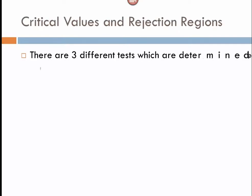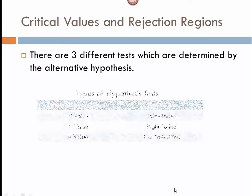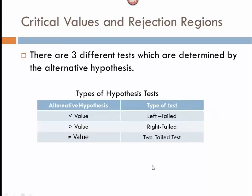And remember also that what type of test we're running depends on the inequality symbol that we have in our alternative hypothesis. If it's a less than symbol, we're doing a left-tailed test, greater than symbol, it's a right-tailed test, and a not equal to symbol, this is a two-tailed test.